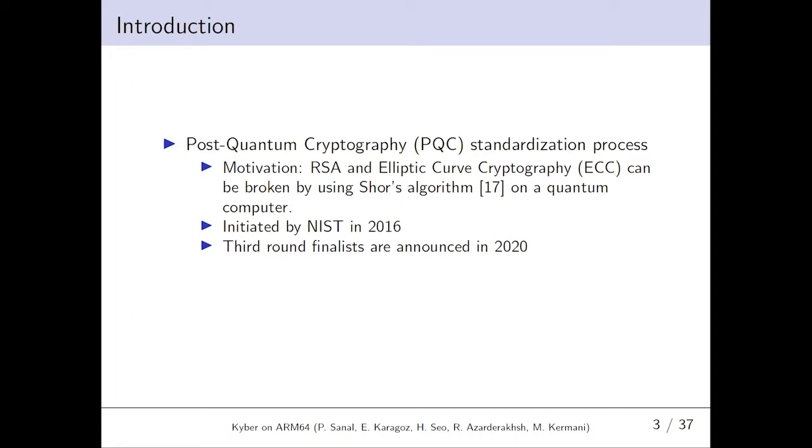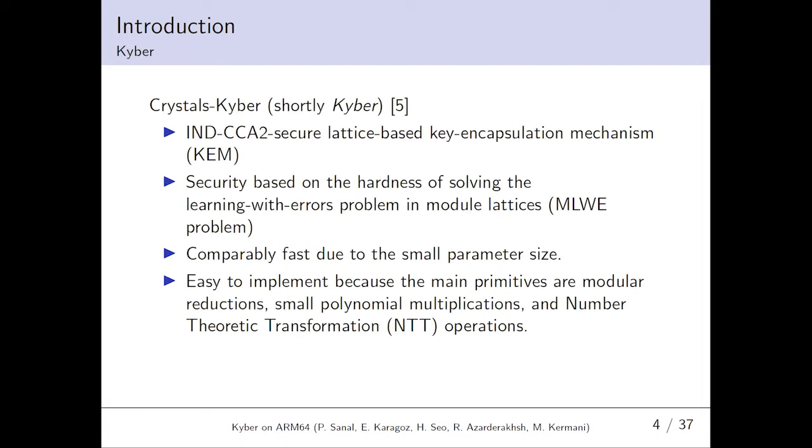Introduction. RSA and elliptic curve cryptography will be broken by using Shor algorithm on a quantum computer. For this reason, the post-quantum cryptography standardization process initiated by NIST in 2016 to choose quantum-resistant algorithms for the upcoming era. In this process, Crystals-Kyber is one of the promising candidates among the third-round finalists announced in 2020. It is an IND-CCA2 secure lattice-based key encapsulation mechanism and its security is based on hardness of solving learning with errors problem in module lattices. In addition, it is comparably fast due to the small parameter size. It is easier to implement because main primitives are modular reduction, small polynomial multiplication and number theoretical transformation operations.